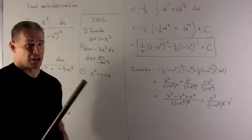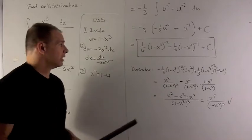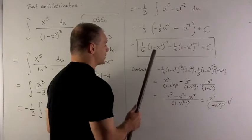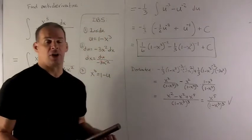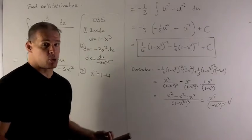Of course we check our answer if there's time. So in this case I'm going to take the derivative of what's in the box. This is just going to be a lot of chain rule. Remember integration by substitution, it's just undoing the chain rule.